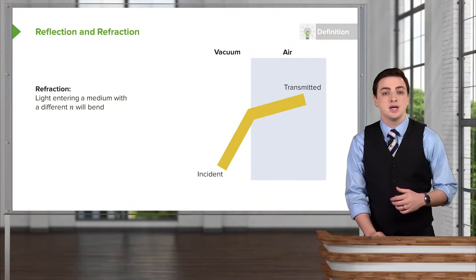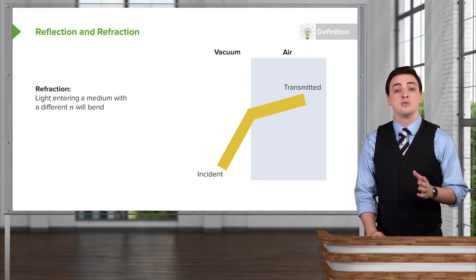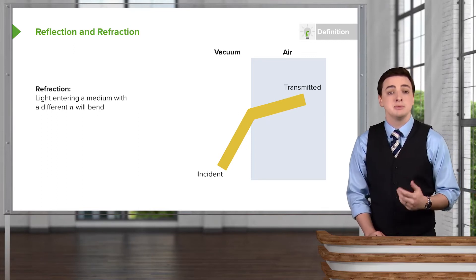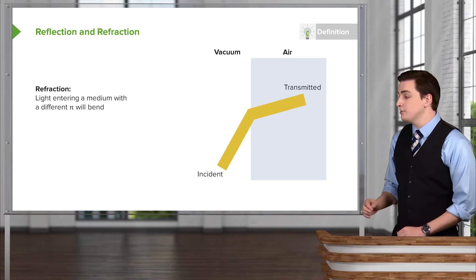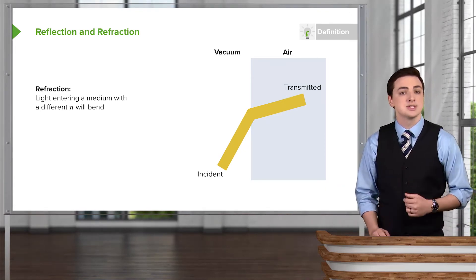Secondly, let's talk about refraction—since we've introduced the index of refraction—for when a beam enters from one medium into another. Suppose we have a light beam like this one, moving towards the air, starting in a vacuum. When the incident beam hits the air,